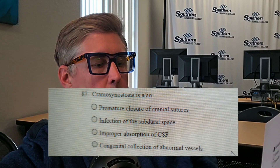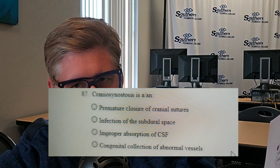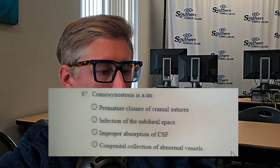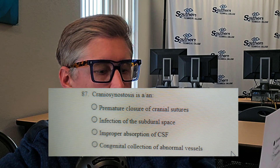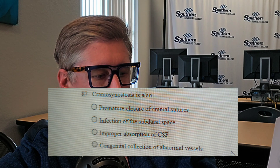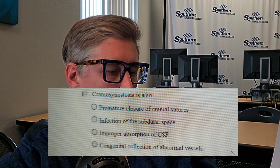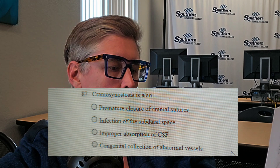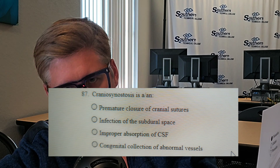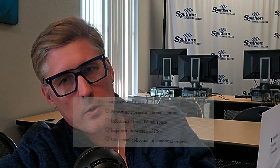Question number three: craniosynostosis — which is a condition — is a what? What type of condition is that? Is it A, a premature closure of the cranial sutures? Is it B, an infection of the subdural space? Is it C, improper absorption of CSF? Or is it D, a congenital collection of abnormal vessels? Go ahead and answer that in the comment section. Do you know what craniosynostosis is?